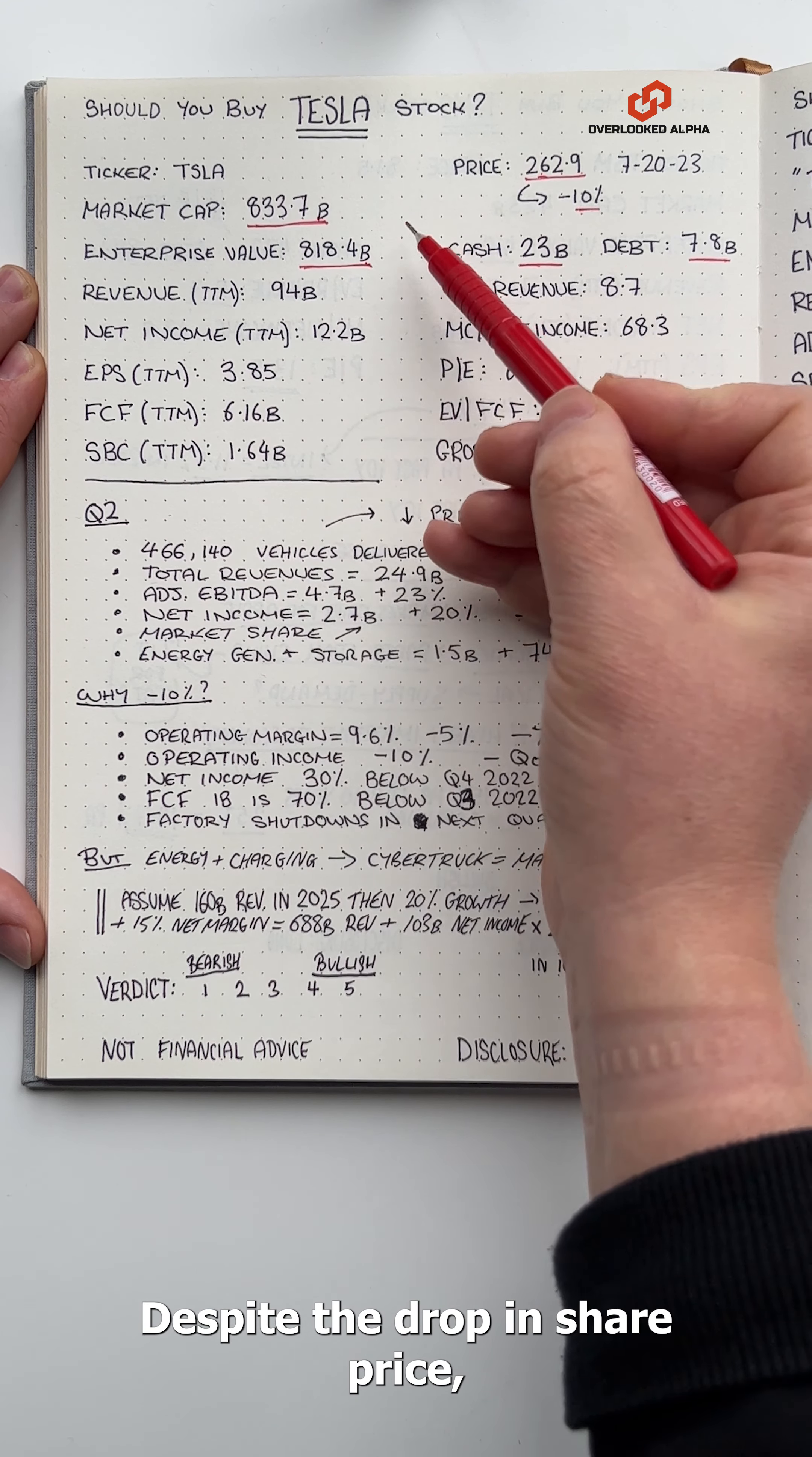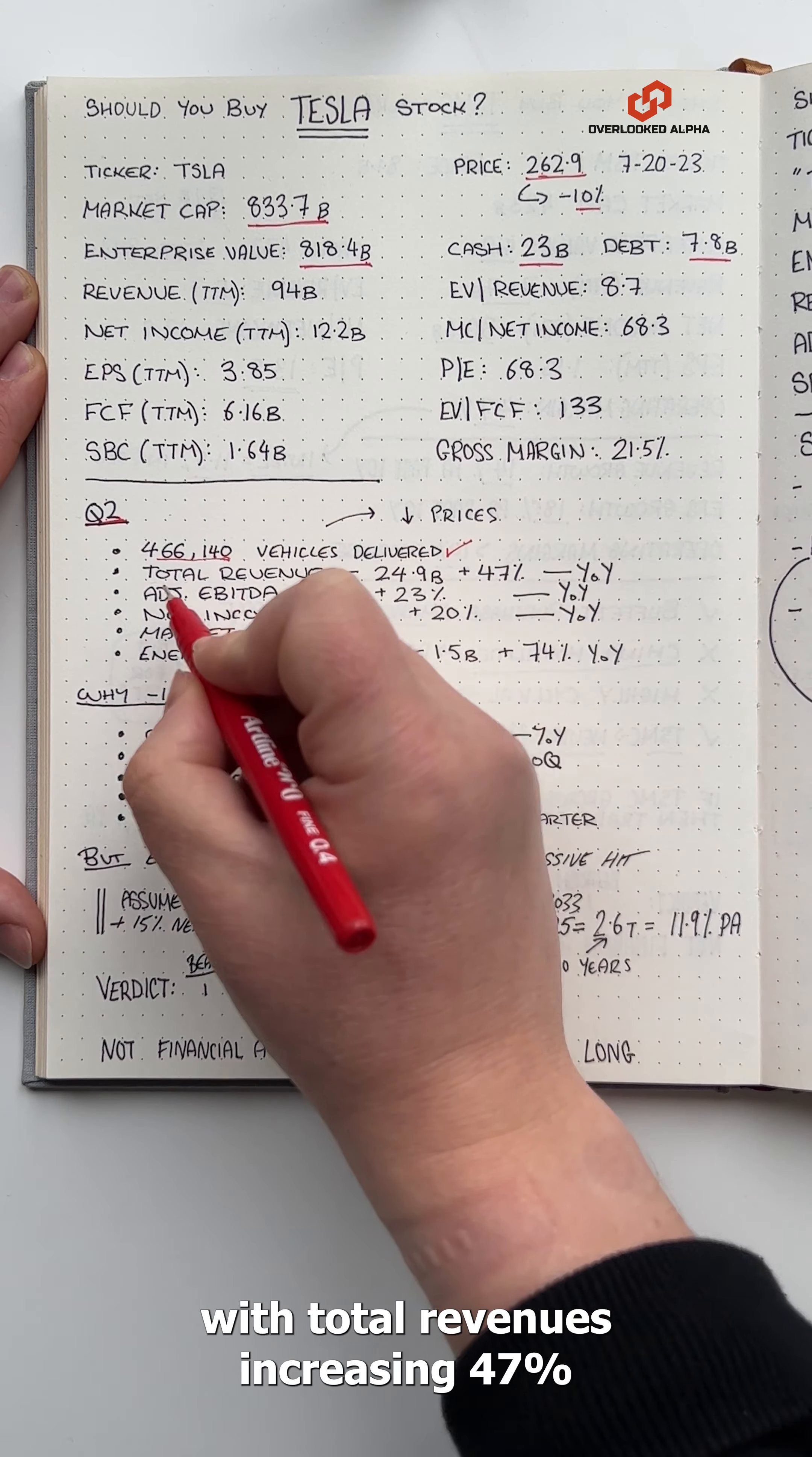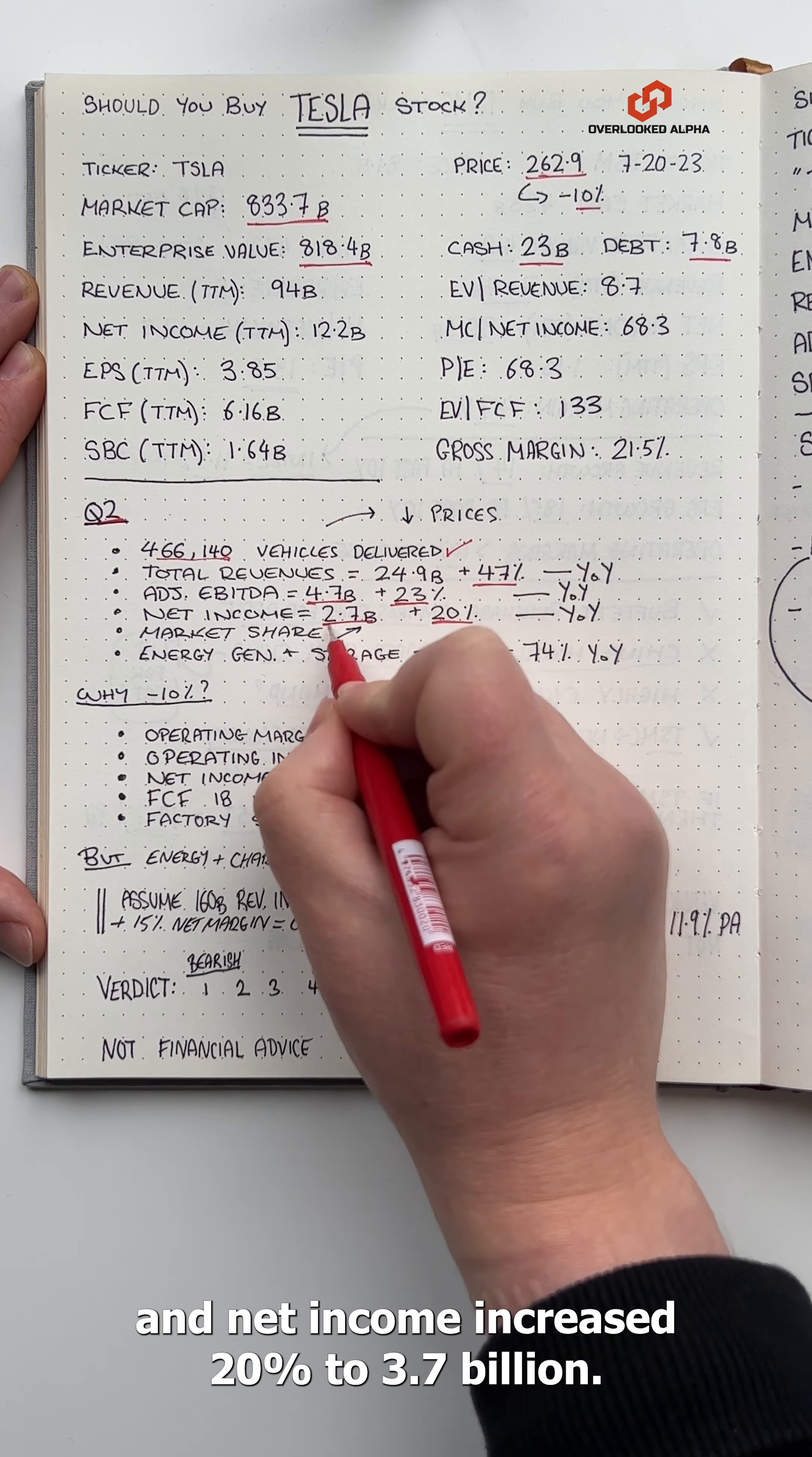Despite the drop in share price, this was another solid quarter for Tesla. The company delivered 466,000 vehicles in Q2 with total revenues increasing 47% against the year ago period. Adjusted EBITDA increased 23% to $4.7 billion and net income increased 20% to $2.7 billion.